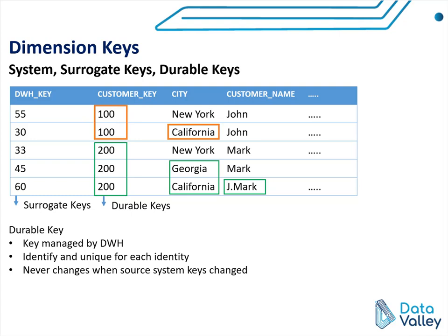In general, we need durable keys when we need a fixed and unique key for each entity so we can track changes over that entity. If we check the last example again, you can see customer first name changes and city changes. Without a durable key, we could consider this as a new customer. However, with a durable key, we consolidate all of this information under a single entity or a single customer.